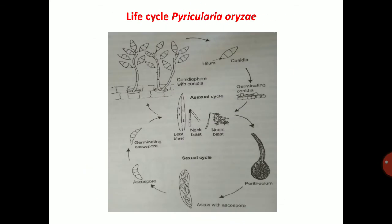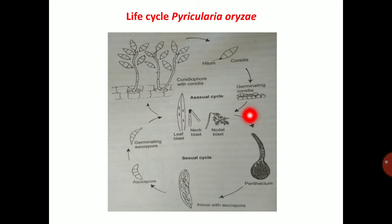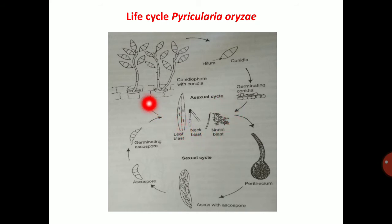Life cycle of Pyricularia oryzae: conidia germinate and produce the appressorium. From the appressorium, infection hyphae are produced, which infect the plant. It produces three types of blasts and breaks through the epidermis layer, after which it produces conidia.